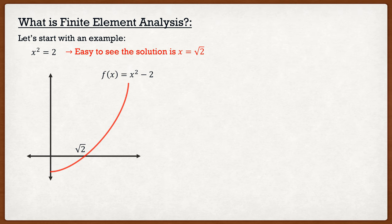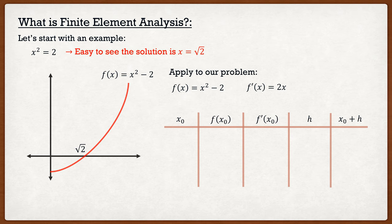So to clearly illustrate this, let's look at our particular problem. We know f(x) = x² - 2, and we can easily take the derivative of f(x) with respect to x to simply get 2x. Now, what we're going to do is create a nice table here of all the parameters that we needed and discussed in the previous slide.